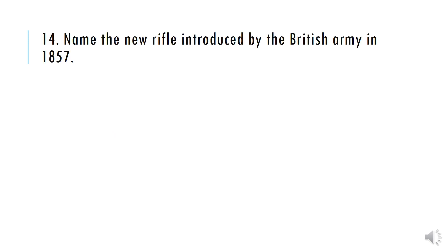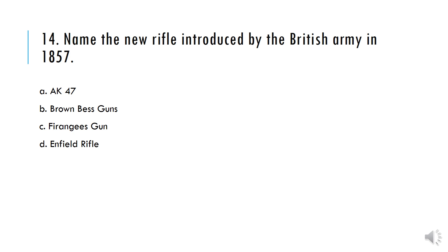Name the new rifle introduced by the British Army in 1857. A) AK-47, B) Brown Bess Guns, C) Ferengi's Gun, D) Enfield Rifle. And the correct option is D — Enfield Rifle.